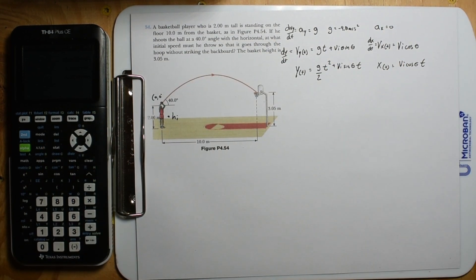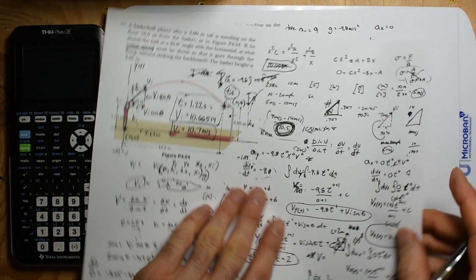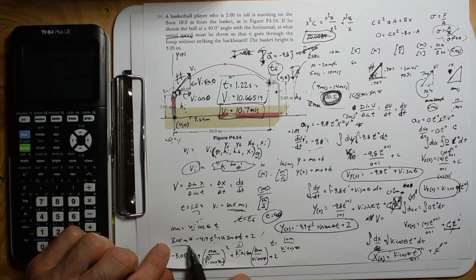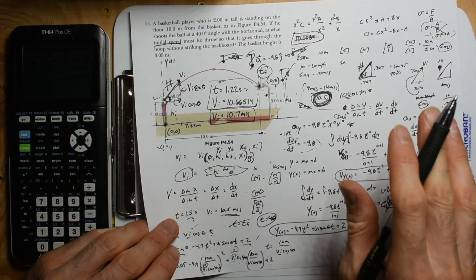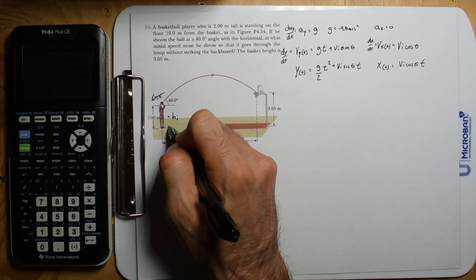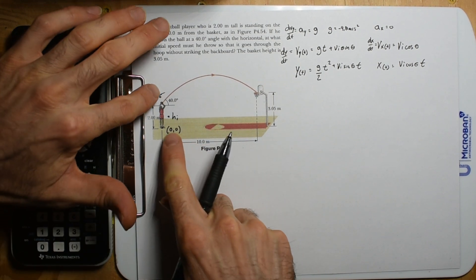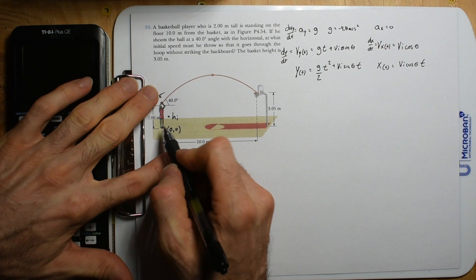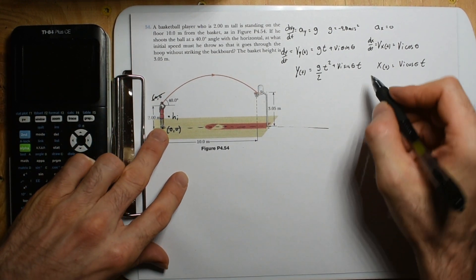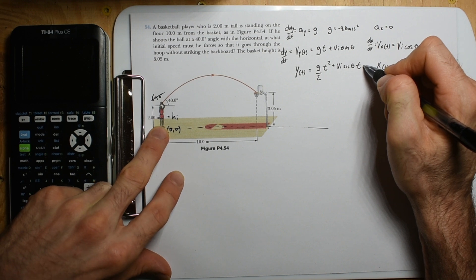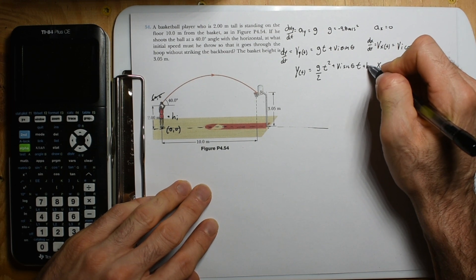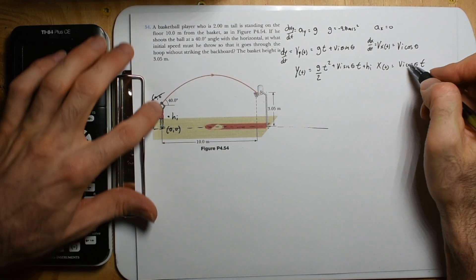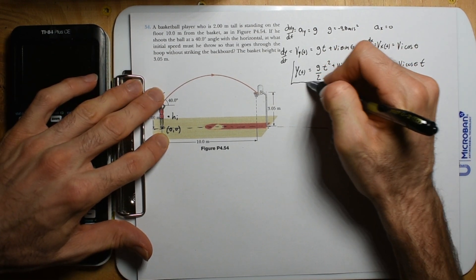Setting v_y equal to dy/dt and v_x equal to dx/dt, separating variables and integrating, we get y(t) = (g/2) t squared plus v_initial sine(theta) times t plus h_initial, and x(t) = v_initial cosine(theta) times t. When t equals zero, position in x is zero, so no extra constant needed. Our origin is at our feet — position (0, 0) — and the initial height is h_initial.